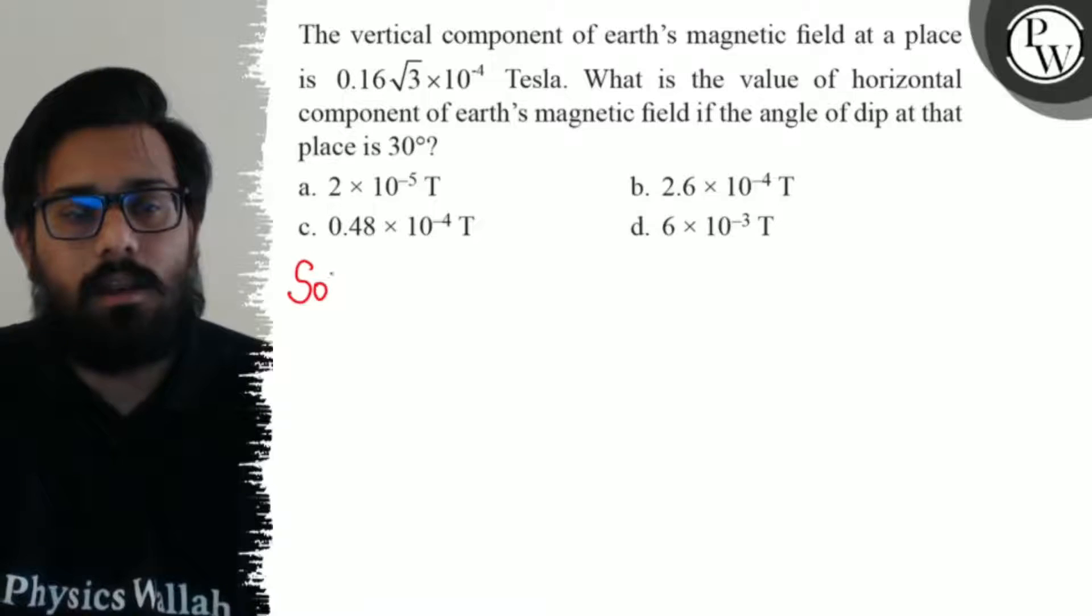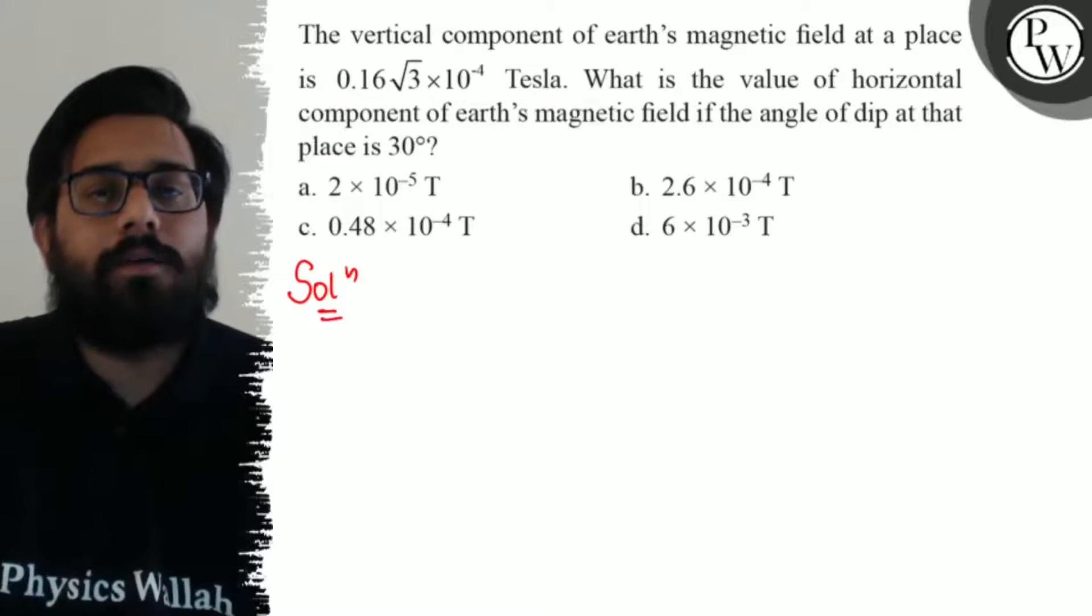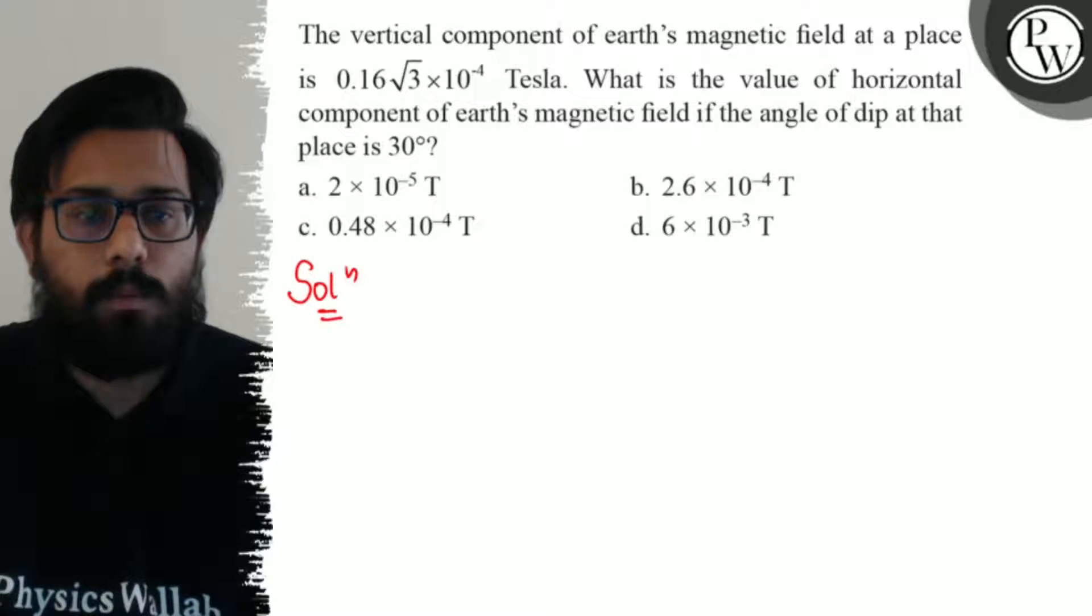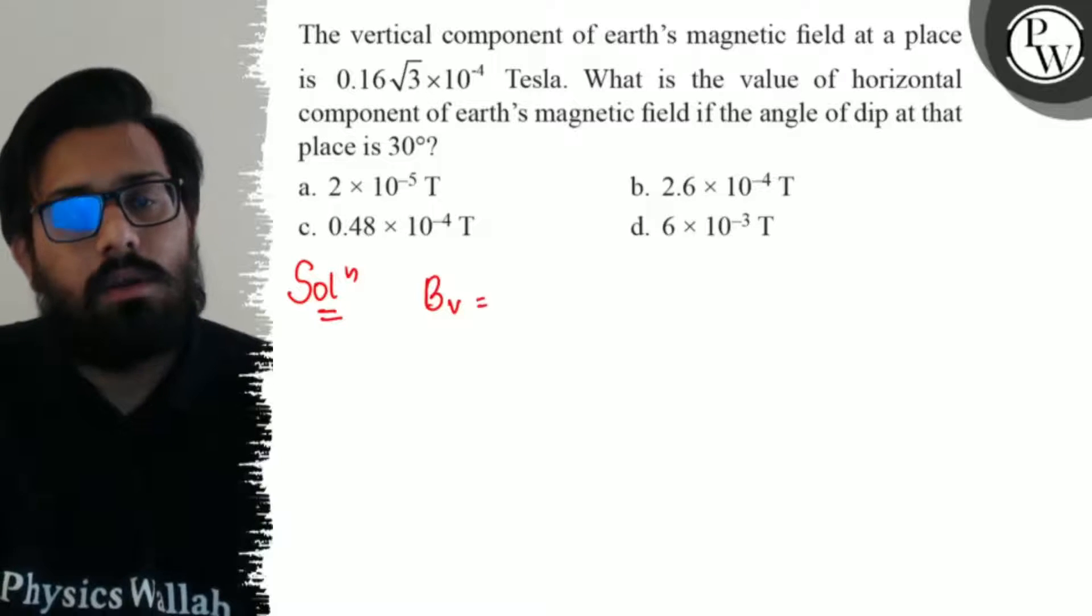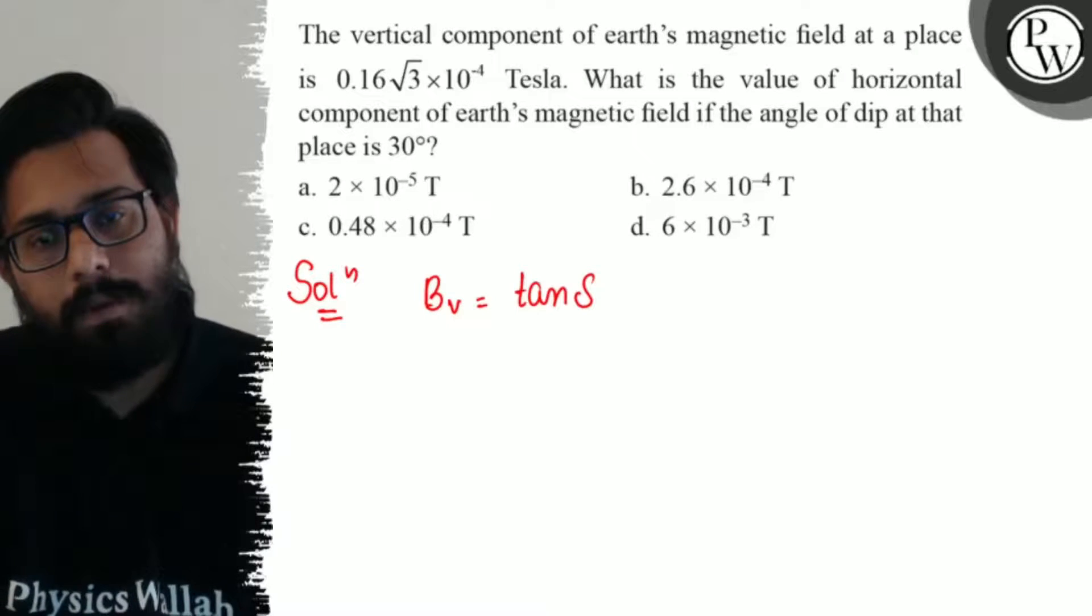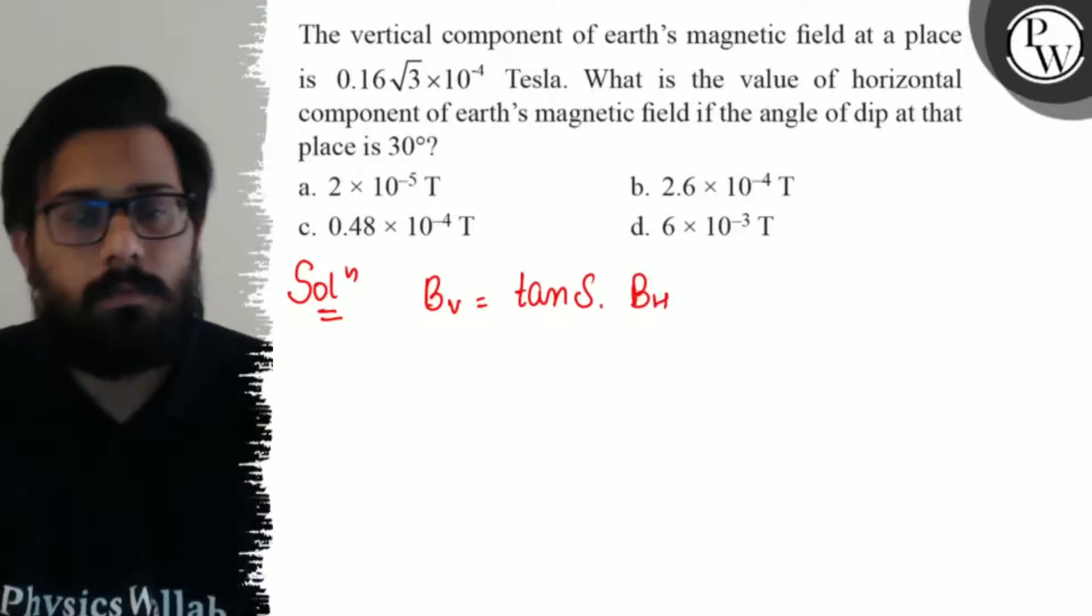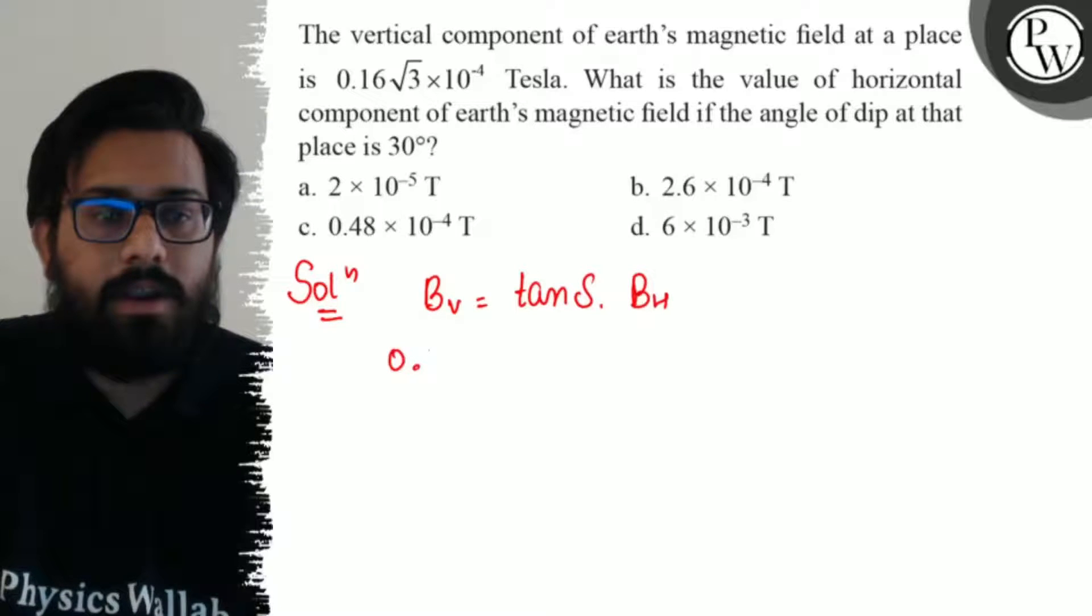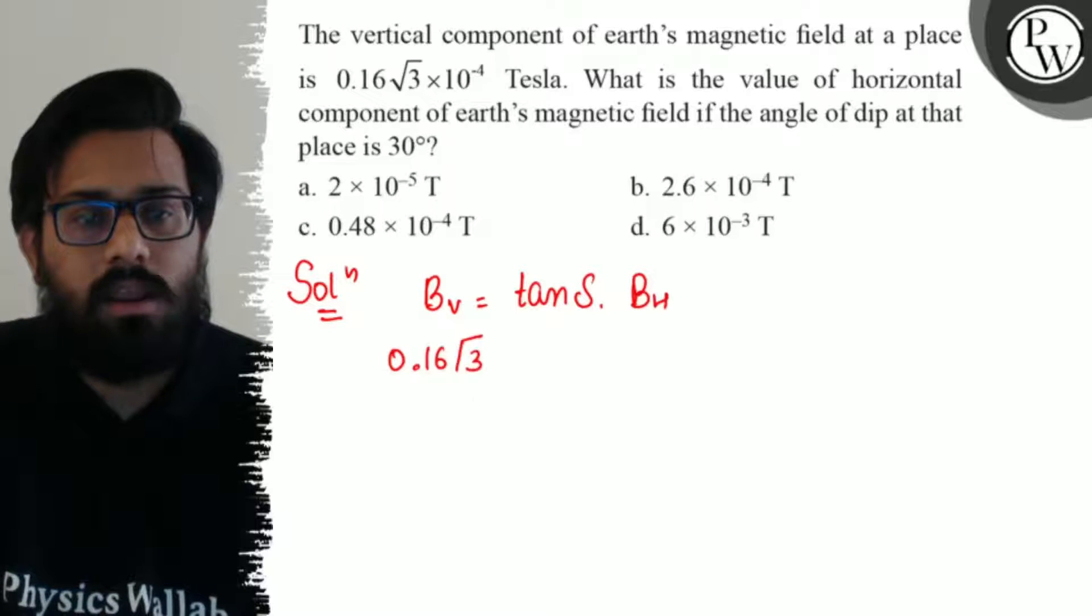So we have to find out the value of horizontal component. We know that Bv equals tan of the angle of dip times Bh. Bv is 0.16√3 × 10^-4.